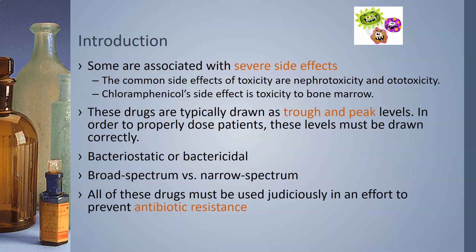Antibiotics can be bacteriostatic or bactericidal. Bacteriostatic antibiotics simply stop bacteria from growing, allowing the immune system to fight them off. Bactericidal antibiotics actually kill the bacteria outright. Antibiotics can also be broad spectrum — working on a wide range of gram-positive, gram-negative, and other bacteria — or narrow spectrum, like tetracycline, which only works on certain specific bacteria. All of these drugs must be used judiciously to prevent antibiotic resistance.